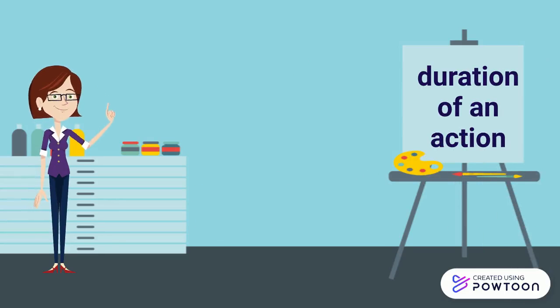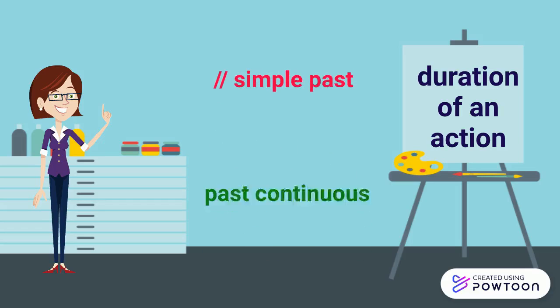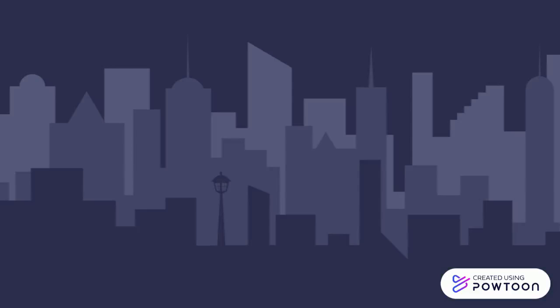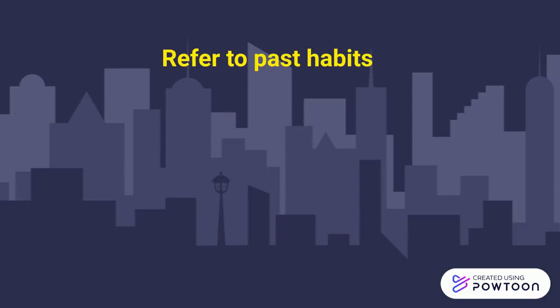The imperfect covers functions that are carried out in English by the simple past and the past continuous. It is used to refer to past habits or traditions.